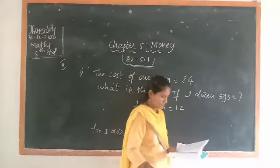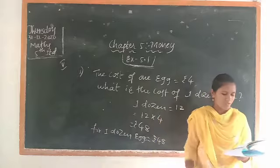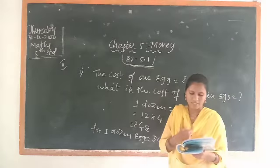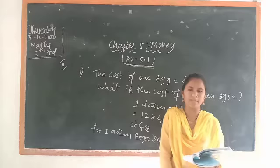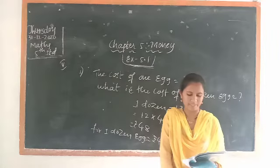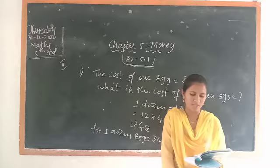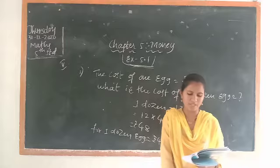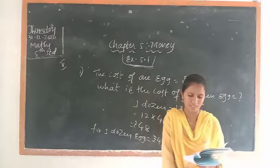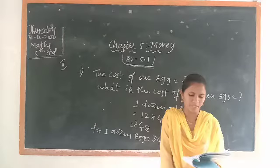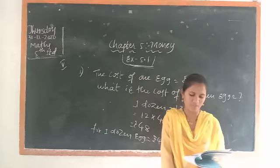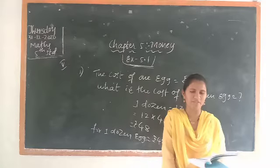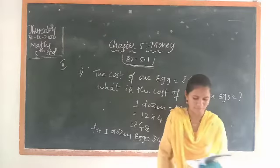Next question. Swati buys 8 metres of cloth at rupee 75 per metre. What is the amount to be paid to the shopkeeper? You have to multiply 75 into 8 and you will get the value.